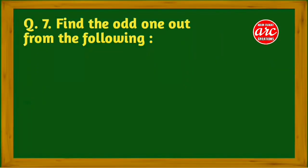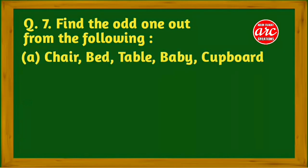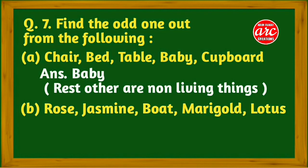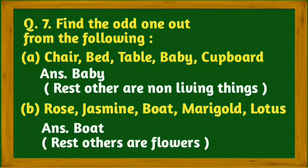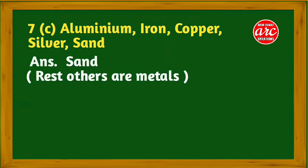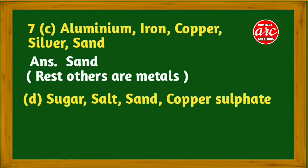Question number seven: Find the odd one out from the following. A: chair, bed, table, baby, cupboard, other. Answer is baby; rest others are non-living things. B: rose, jasmine, boat, marigold, lotus. The answer is boat; rest are flowers.